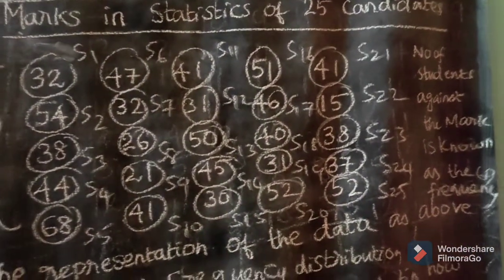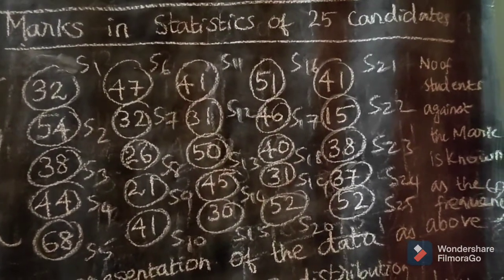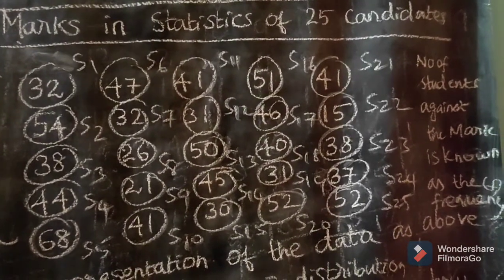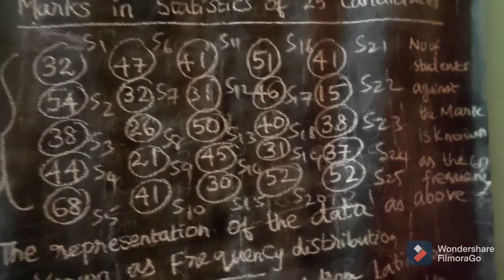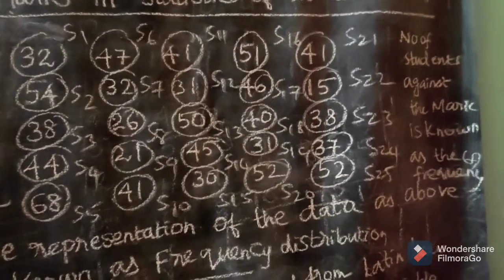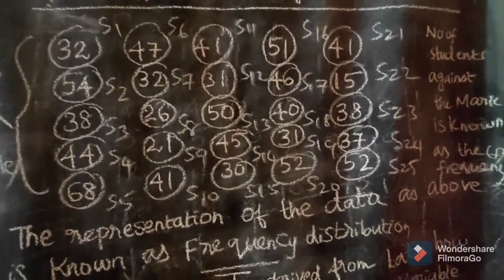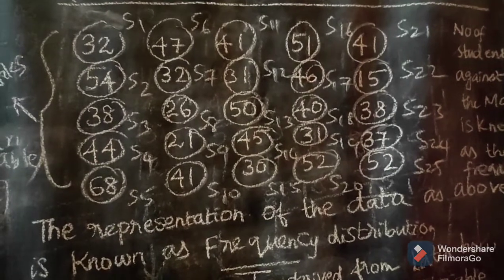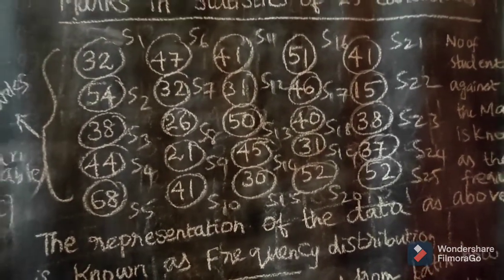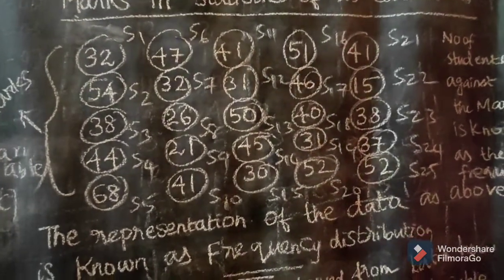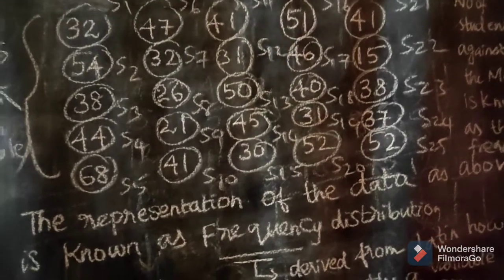It's a collection of data. Marks in statistics of 25 candidates — 25 candidates are marked across all subjects. S1 represents Student 1 in the calculation, so Students 1 through 25.